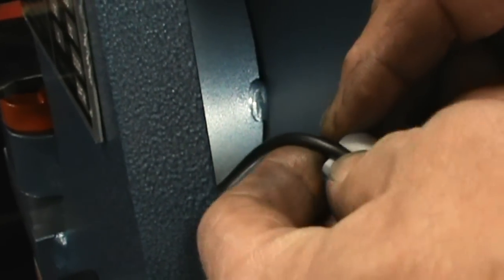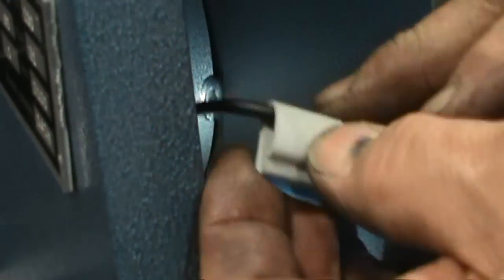Using the adhesive clip, place the wire in it and stick it to the side of the machine to clear beam movement.